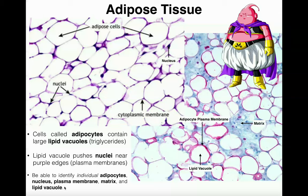In terms of adipose tissue's location, we have it everywhere — anywhere you have body fat. Men tend to store it in the abdominal area, women tend to store it in the hips and thighs. We also have adipose tissue that cushions joints, so really it's going to be found everywhere in the body to some extent.